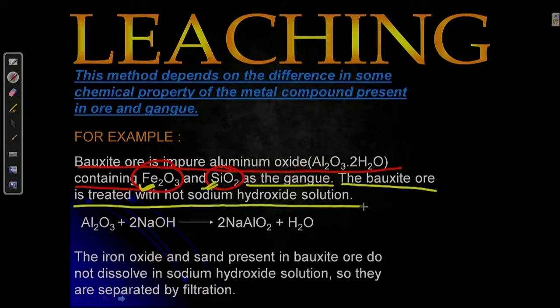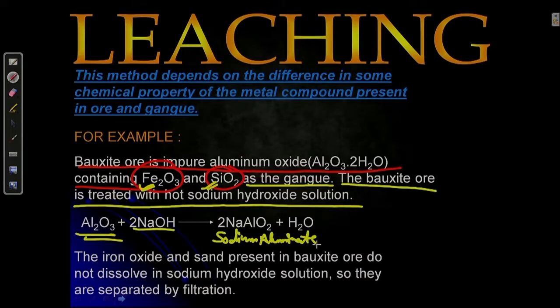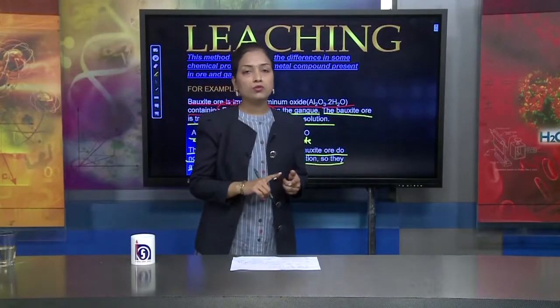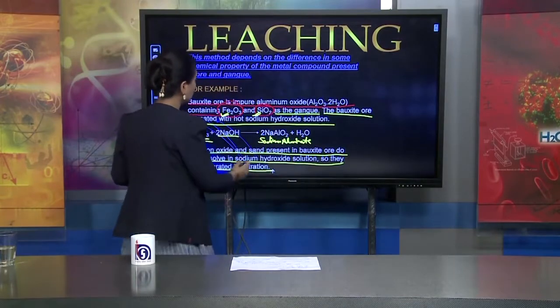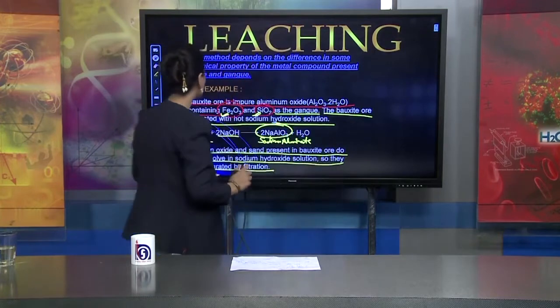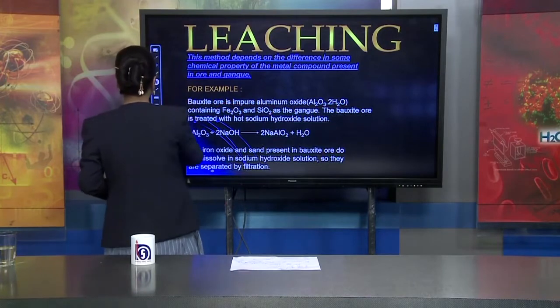The bauxite ore is treated with hot sodium hydroxide solution. Al₂O₃ reacts with sodium hydroxide to give sodium aluminate — formula Al(OH)₄⁻ — and water. The iron oxide and sand present in bauxite ore do not dissolve in sodium hydroxide solution, so they are separated by filtration. The ore in metal form reacts with sodium hydroxide to form sodium aluminate, which is then separated, and from sodium aluminate we convert it to oxide form, then reduce it to extract pure metal.